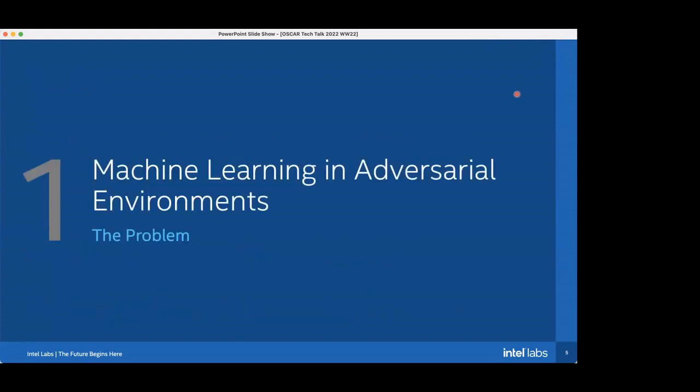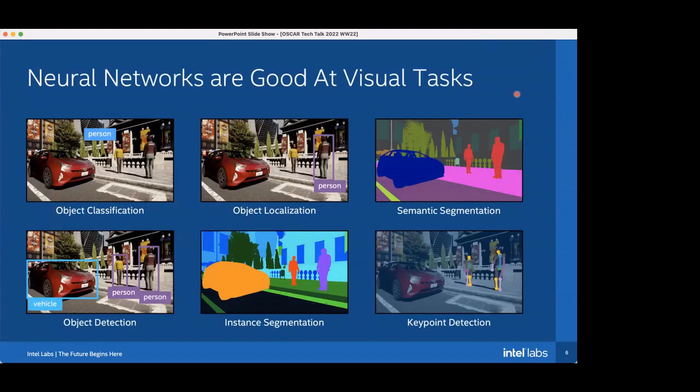The first section is about this problem of machine learning in adversarial environments. If you know anything about machine learning and in particular computer vision, deep neural networks have taken over computer vision and are able to solve a lot of tasks that previously were seen as difficult. Here we have six types of computer vision tasks that deep neural networks are really good at doing.